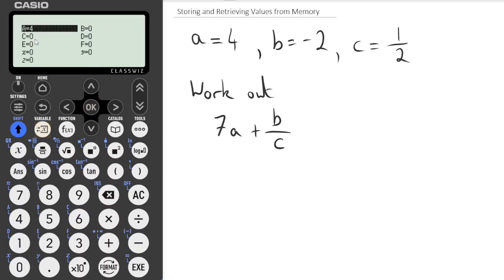If I press variable again, you can see A is 4. I can do that again for minus 2 for B. If I make B minus 2, variable, go across to B and store.